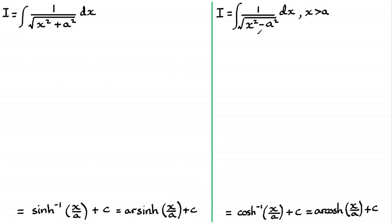We've got another integral that looks very similar, only we've got a negative sign here, and it's only valid for x greater than a. You can see that it's equal to the inverse cosh of x over a plus a constant of integration, or using the notation: arcosh(x/a) plus c.